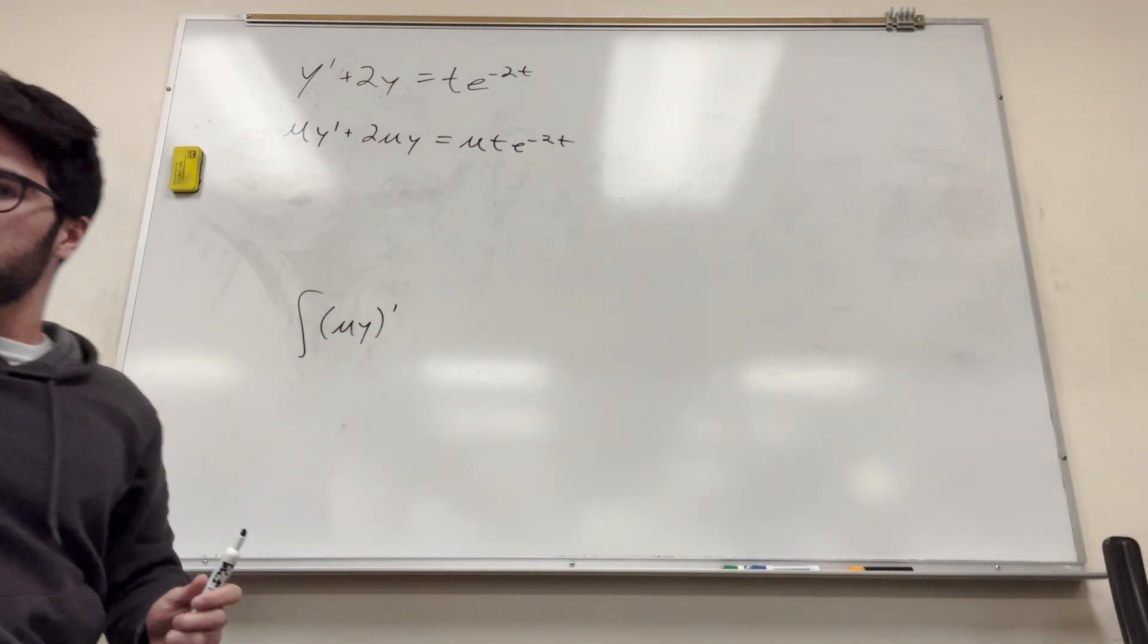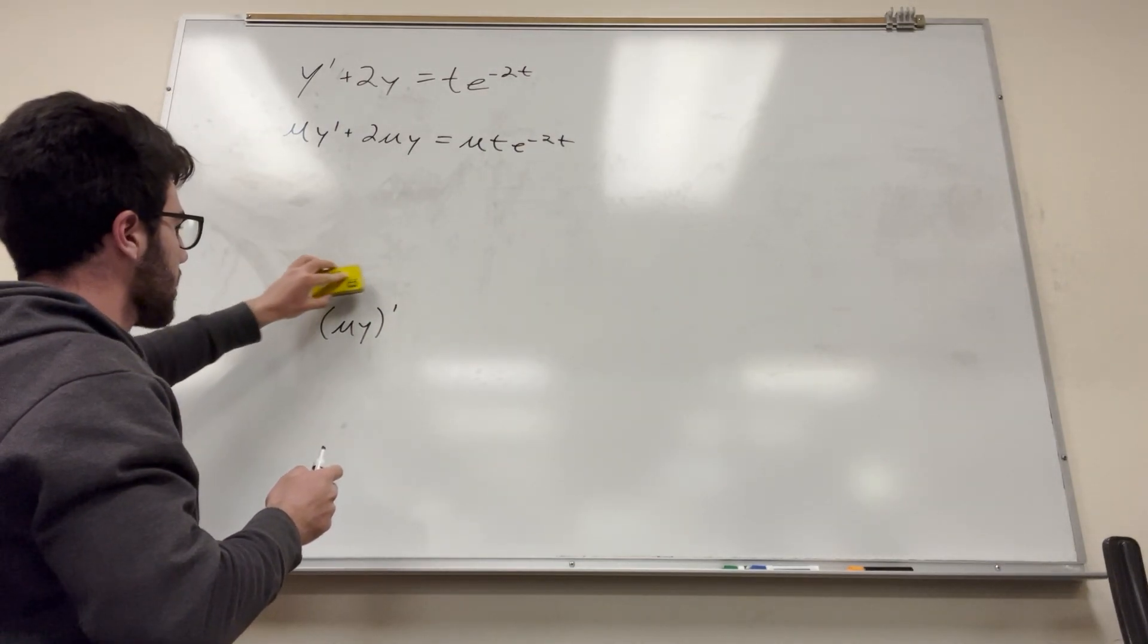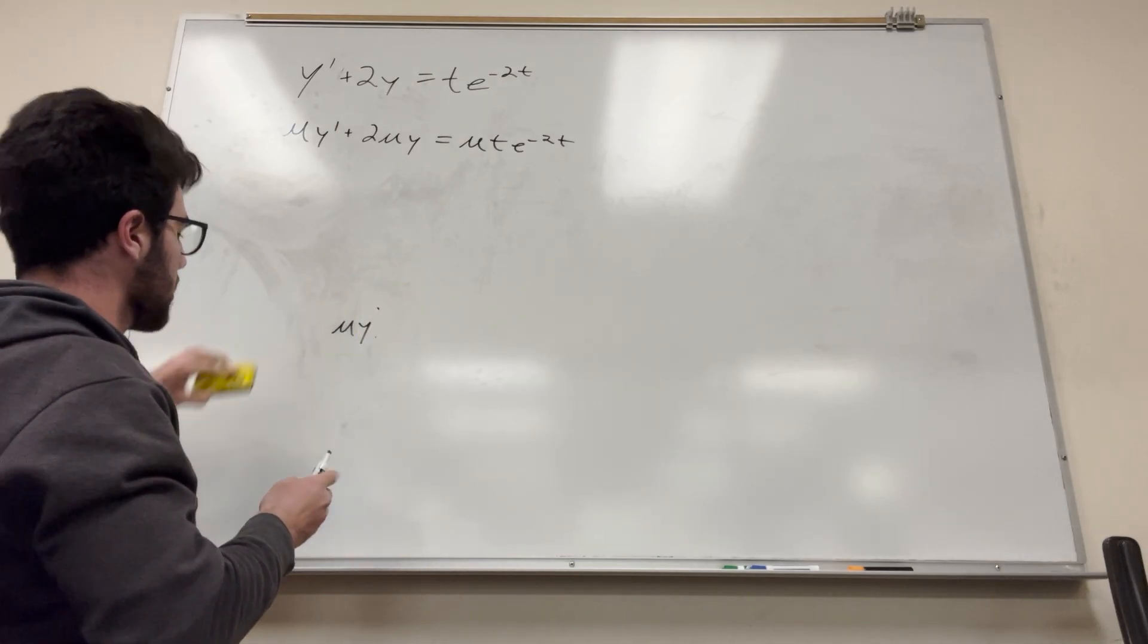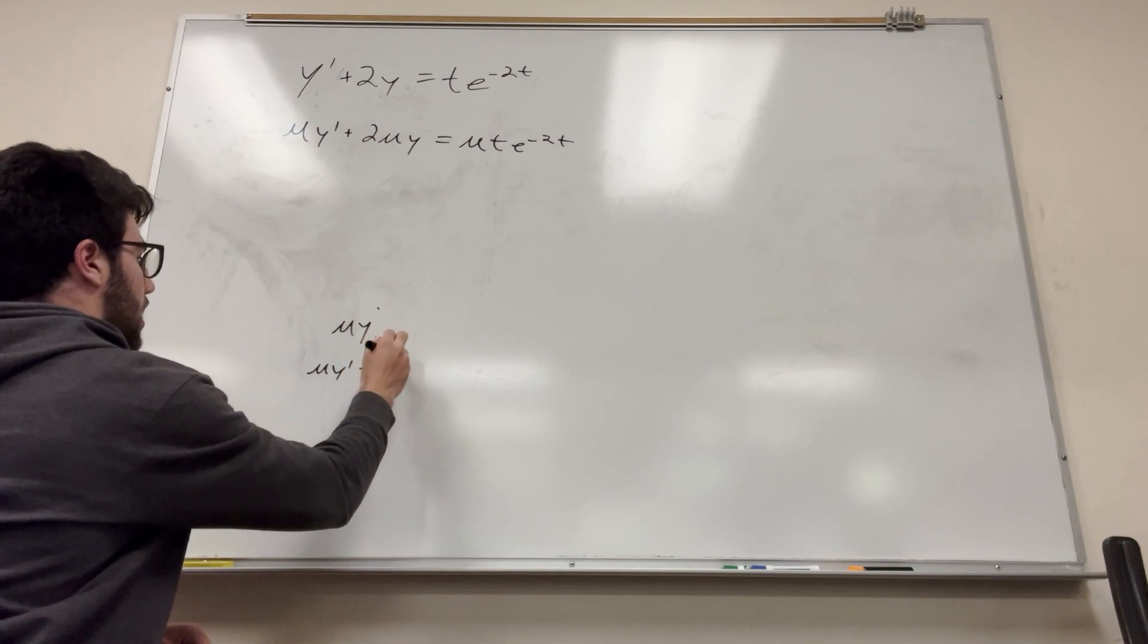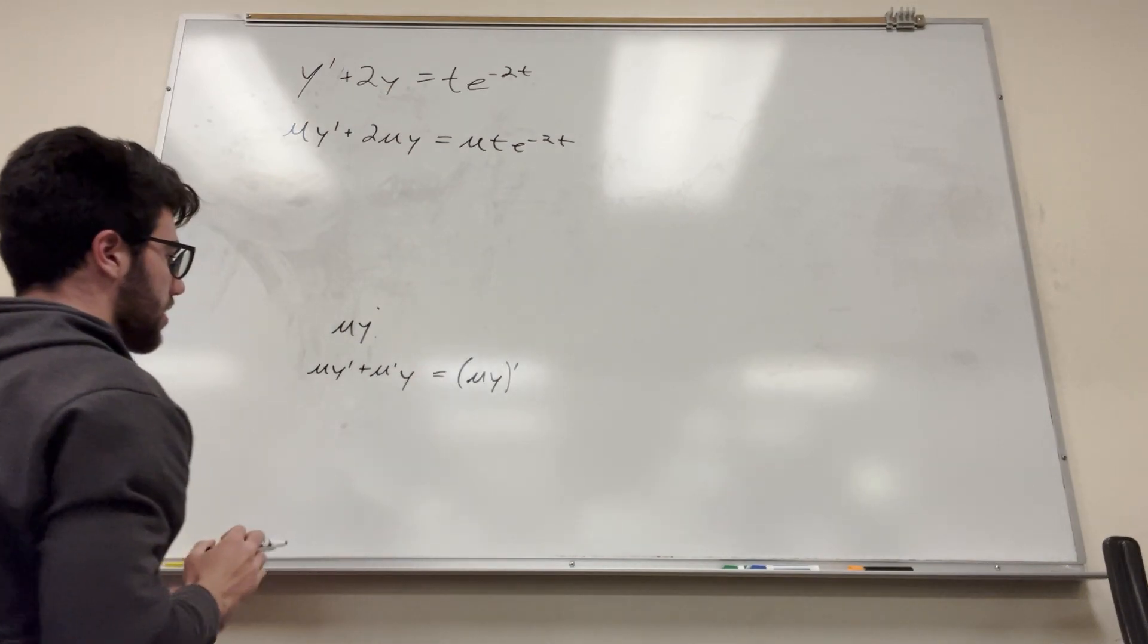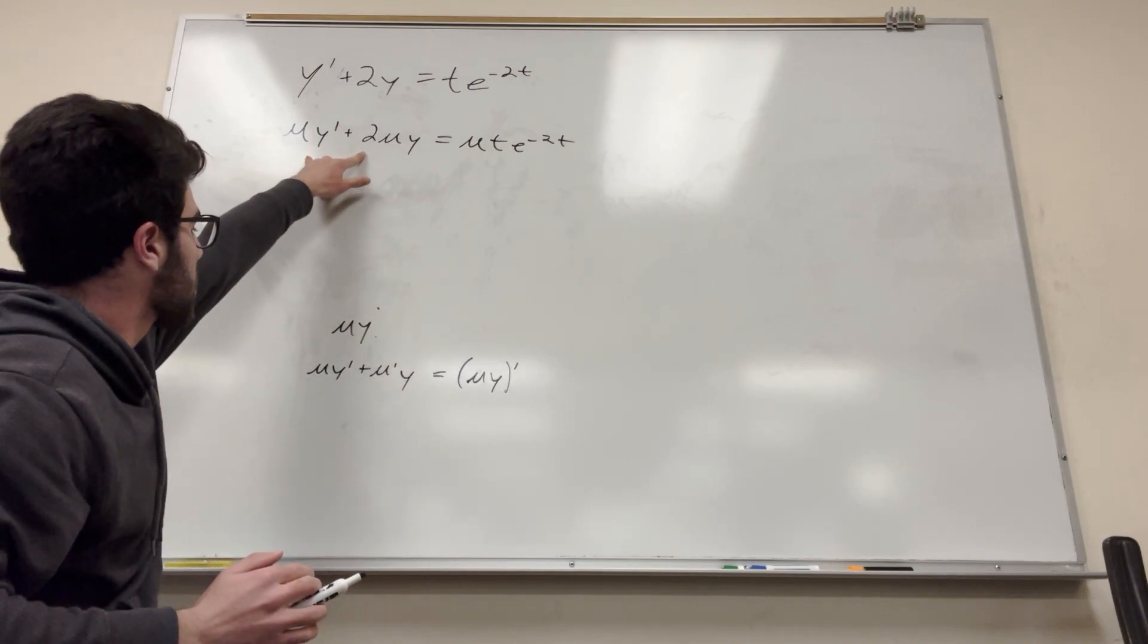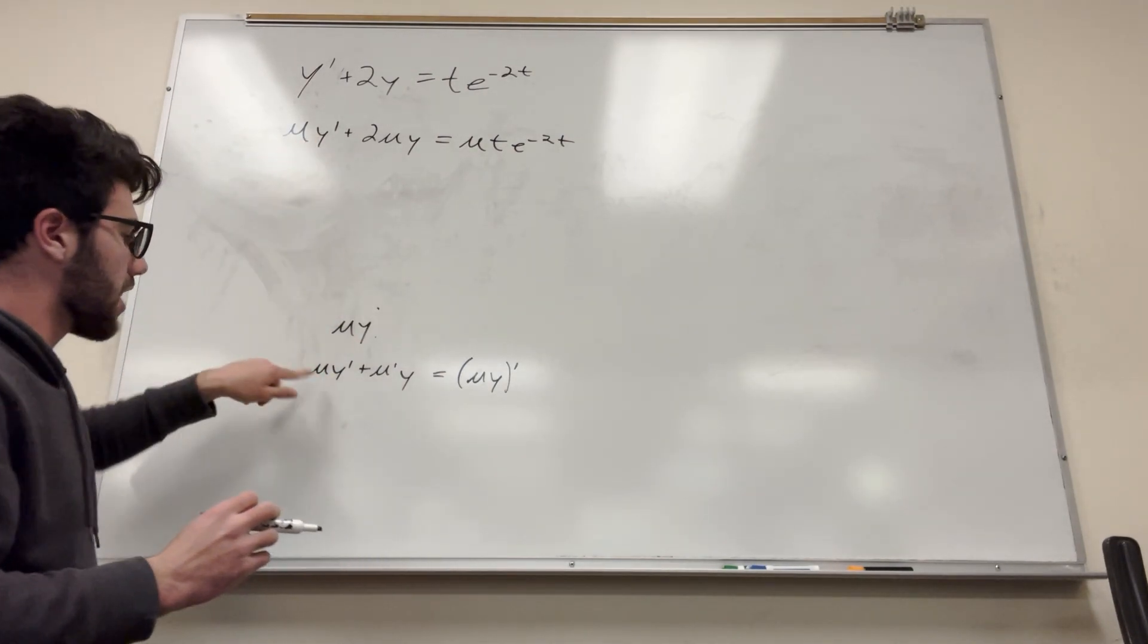So what happens if we take the derivative of mu y? Well, by chain rule, we're going to get mu y prime plus mu prime y. And this is equal to what we want, basically, mu y prime. So what are we looking for? We're trying to get this equation in this form. So as you can see here, we have mu y prime. We already have that. Perfect.